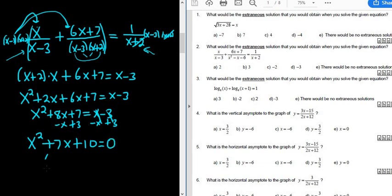This should factor. So we need two numbers that multiply to 10 and add to 5. So I think 5 and 2 should work, and they both should be positive because they need to add to a positive 7. So you get two possible answers here: negative 5 and negative 2.